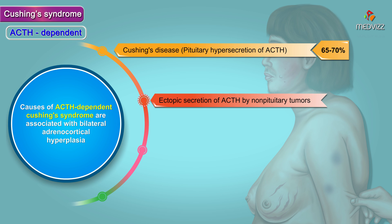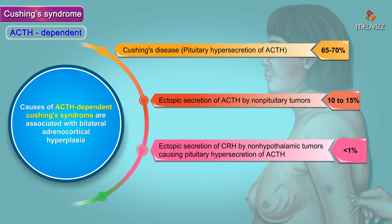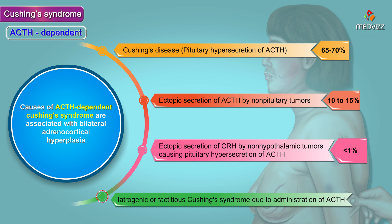Ectopic secretion of adrenocorticotropic hormone by non-pituitary tumors accounts for 10 to 15 percent. Ectopic secretion of CRH by non-hypothalamic tumors causing pituitary hypersecretion of ACTH is less than 1 percent. Iatrogenic or factitious Cushing syndrome due to administration of exogenous adrenocorticotropic hormone, not glucocorticoids, is less than 1 percent.